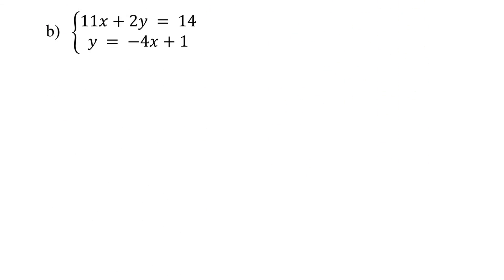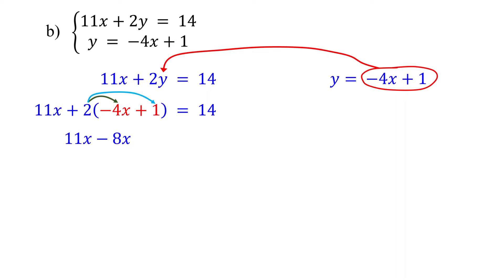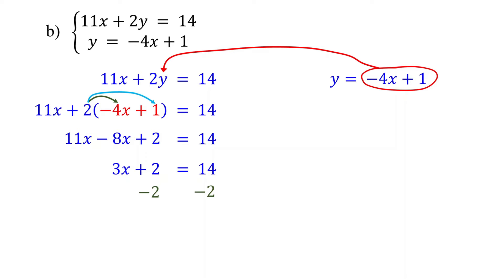Now let's try the second example, where the second equation is already solved for y. Since y is already isolated, we just need to substitute this expression for y into the first equation. Let's solve this equation for x. First, distribute the 2: 2 times negative 4x is negative 8x, and 2 times 1 is 2. Then combine like terms: 11x minus 8x equals 3x. Now subtract 2 from each side. 14 minus 2 is 12. Divide both sides by 3 to isolate x, and you get x equals 4.